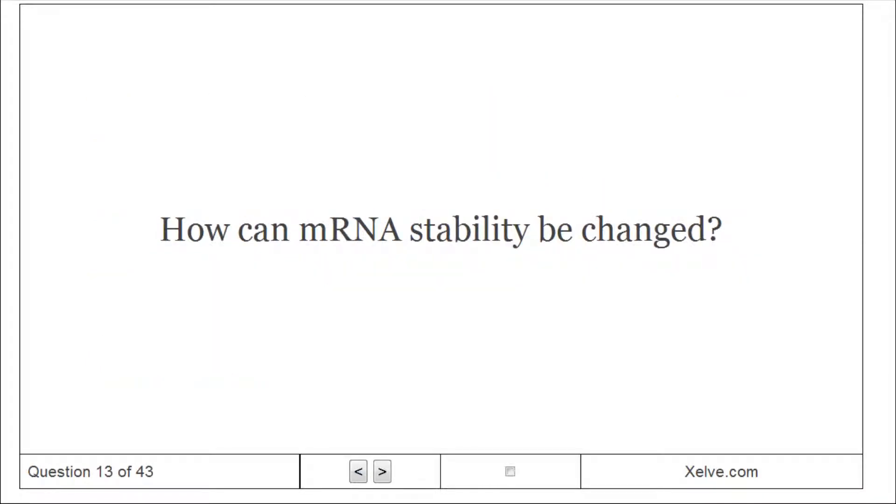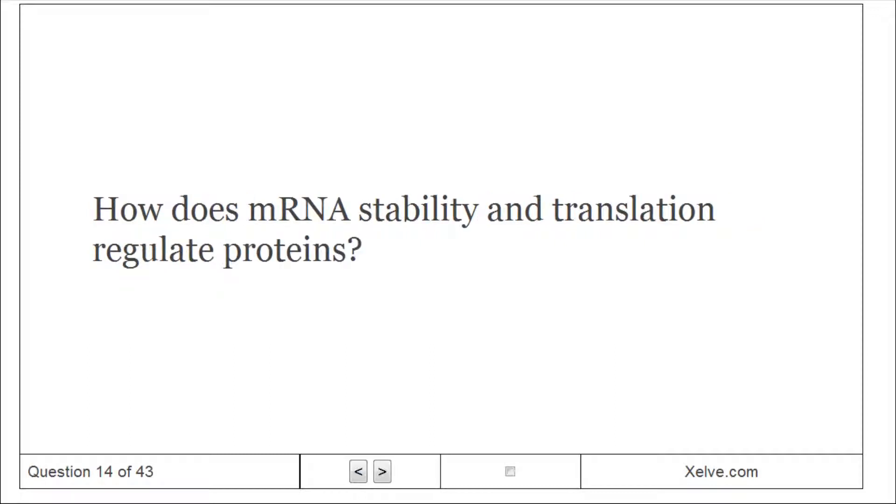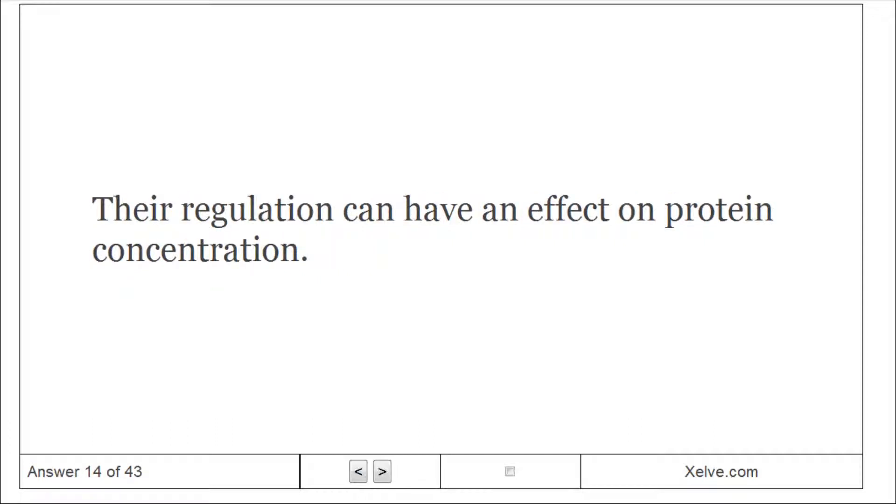How can mRNA stability be changed? By regulating the rate at which the mRNA is degraded. How does mRNA stability and translation regulate proteins? Their regulation can have an effect on protein concentration.